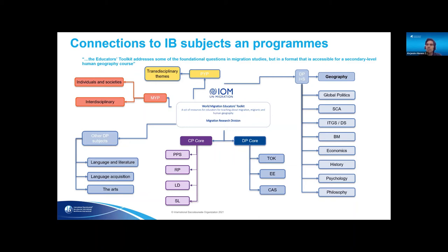The main point of entry was geography, but then we started noticing that in most courses there were clear ways educators could employ it — mainly in the individuals and societies subjects such as local politics, social and cultural anthropology, information technologies in a global society, business management, economics, history, and also in core subjects such as theory of knowledge and extended essay. We also realized there were many subjects that at first instance would not seem to focus on migration but clearly had links, such as language and literature, where students discuss global issues and an increasing number are addressing migration as one of the global issues they are interested in.